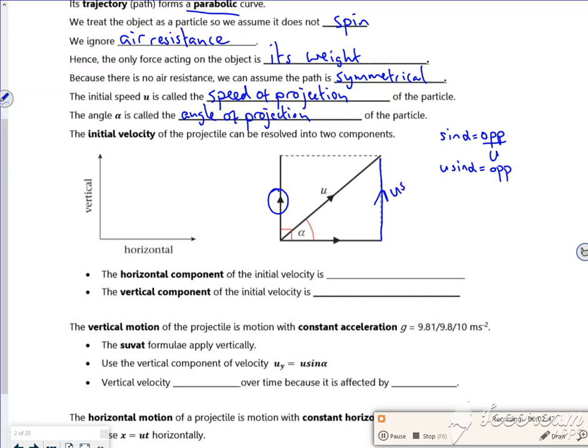If I looked at cos alpha that would be the adjacent over u, so u cos alpha is my adjacent. So this component, the one at the bottom, is u cos alpha there. So the horizontal component is u cos alpha and the vertical component is u sine alpha.